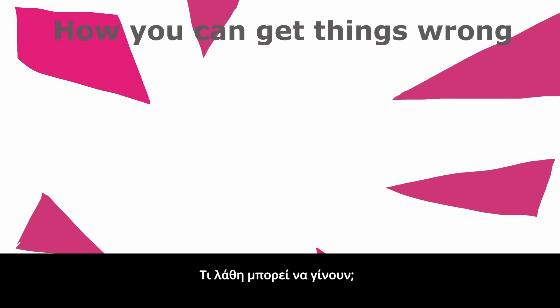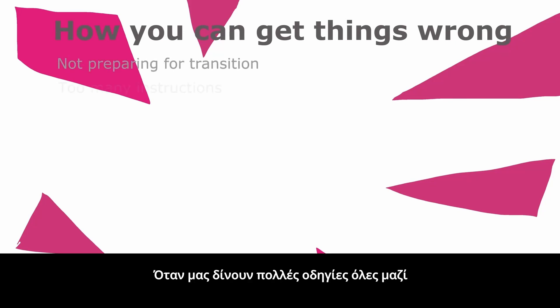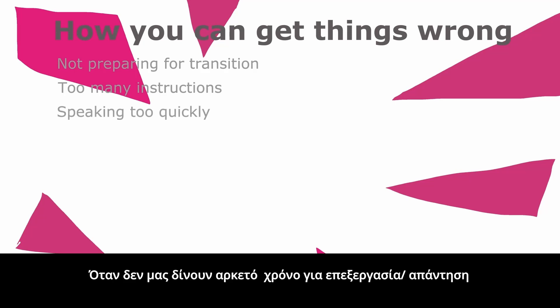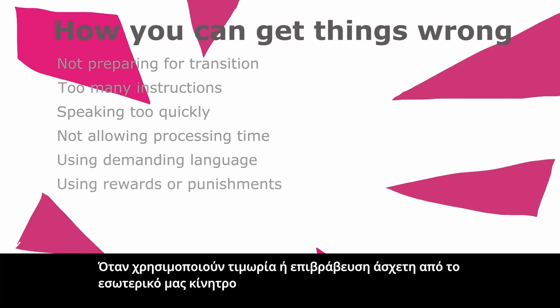How you can get things wrong: not preparing for transitions, too many instructions, speaking too quickly, not allowing processing time, using demanding language, using rewards or punishments instead of intrinsic motivation.